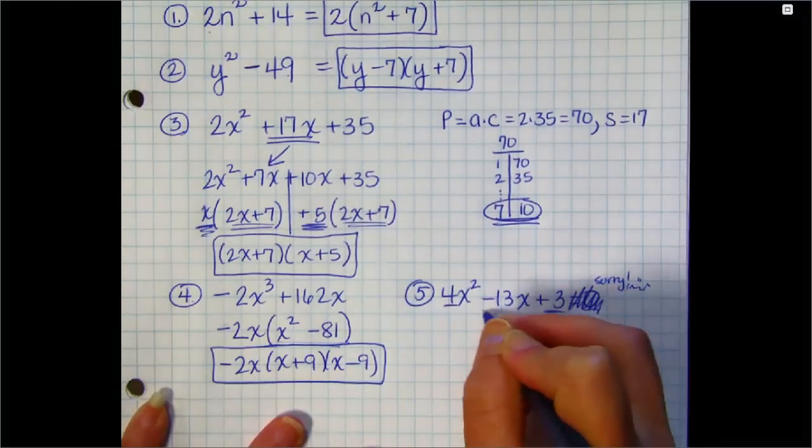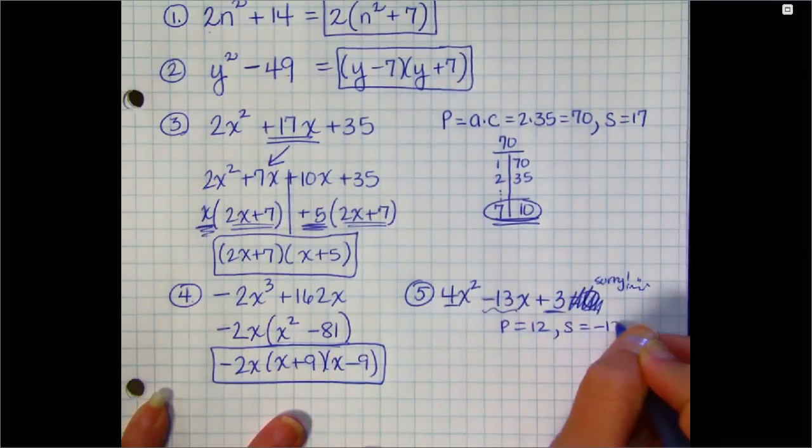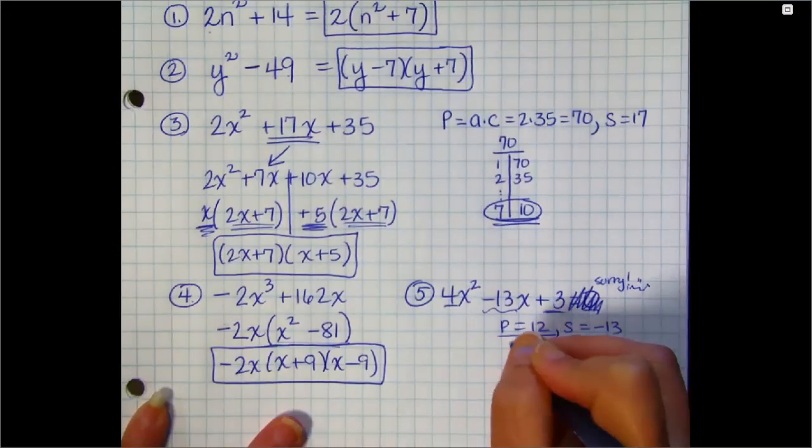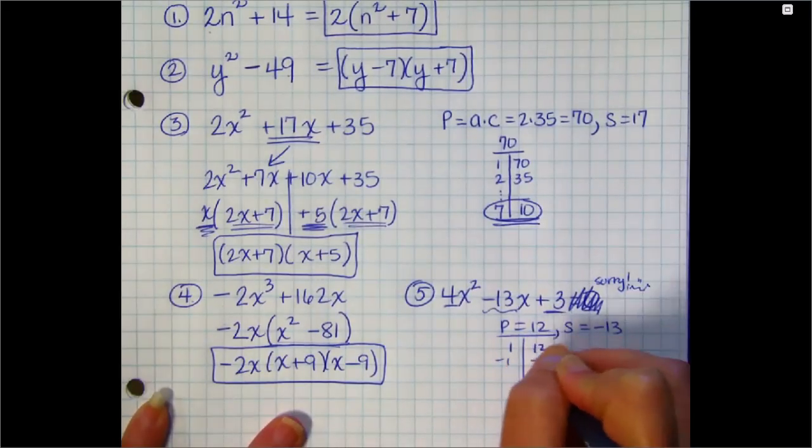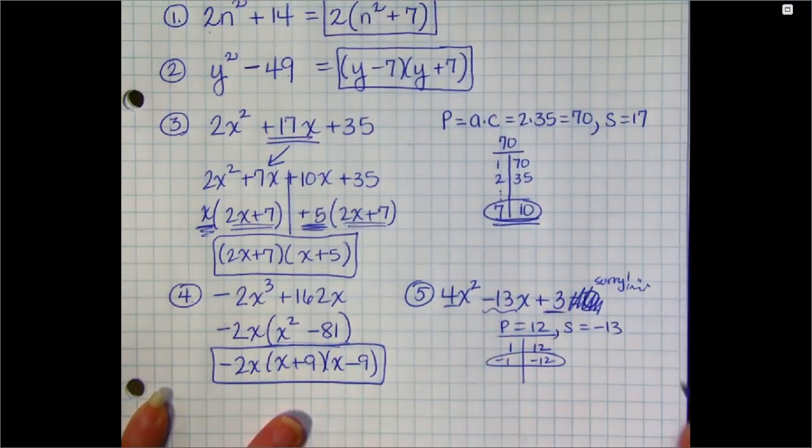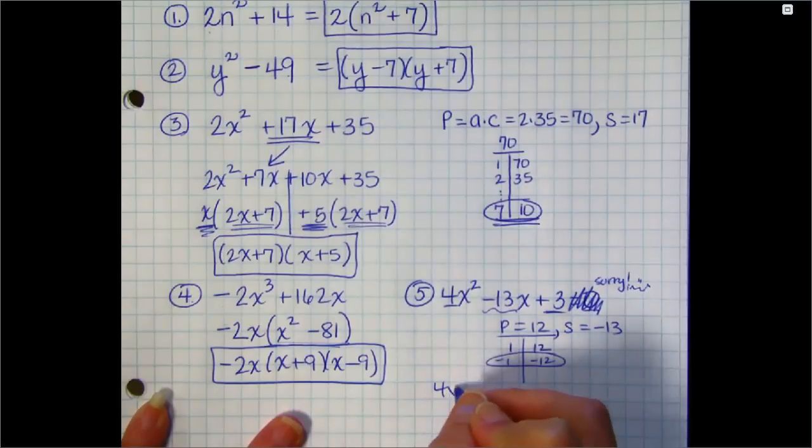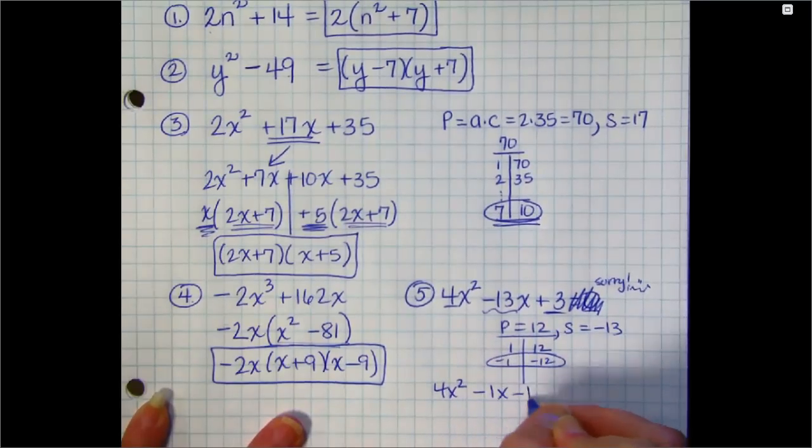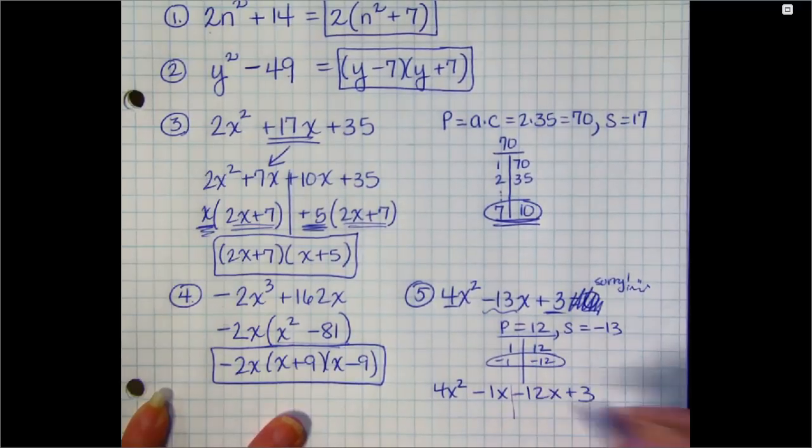And the sum I need is the B term, negative 13. So I'm looking for two numbers that multiply to positive 12 and add to negative 13. And that would be negative 1 and negative 12. So I split my middle. I rename it. It's negative 1x minus 12x. Bring down the front and bottom.